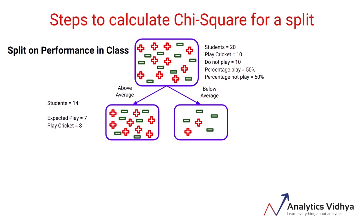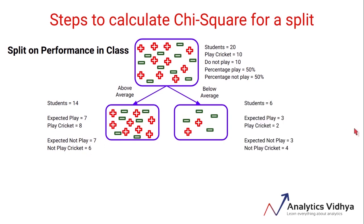So we have both the expected value of 7 and the actual value of 8. The expected value is calculated based on the distribution of the parent node for the same class. Similarly, the expected number of students who do not play cricket will also be 7, while the actual value turns out to be 6. For the below-average node, the expected play and not-play values will be 3 each, whereas the actual values are two students play cricket and four do not.